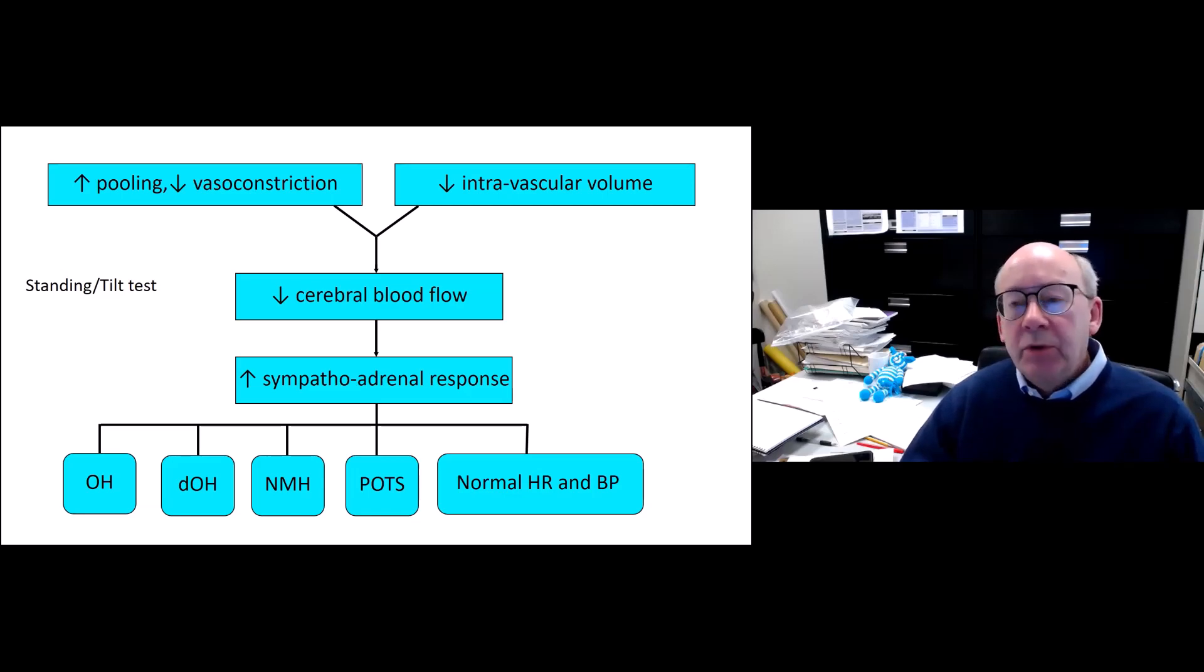In response, you can get one of the forms of orthostatic intolerance shown at the bottom. The first is orthostatic hypotension. That needs to occur within the first three minutes upright. Delayed orthostatic hypotension is the same, has the same appearance, but it occurs beyond the three-minute point. Neurally mediated hypotension is the term we use for a pattern of drop in heart rate and blood pressure that is caused by a vasovagal reflex. POTS stands for postural tachycardia syndrome. And then there are a portion of patients who have a normal heart rate and blood pressure response, and we'll come back to that in a second.